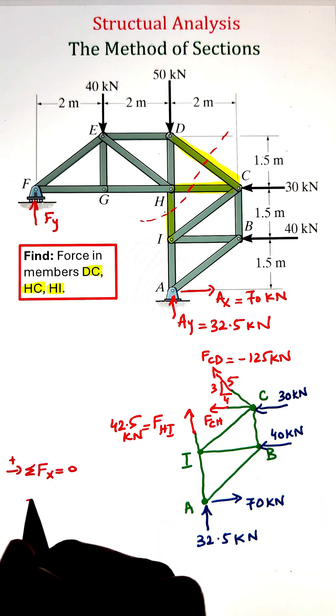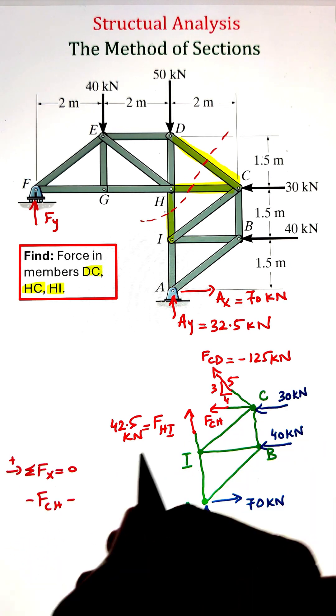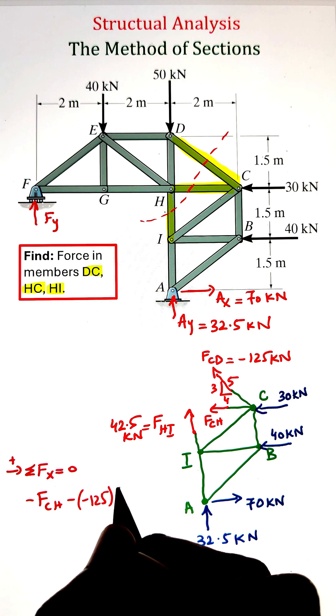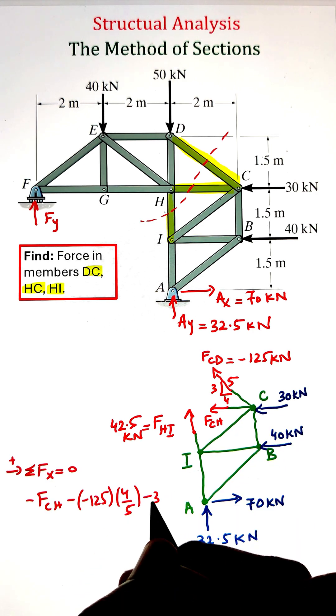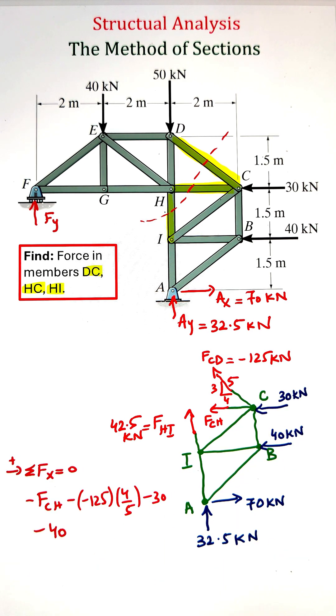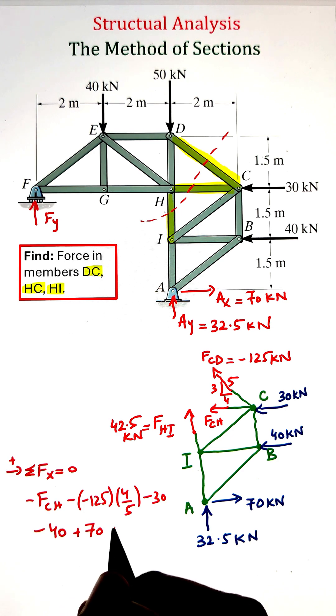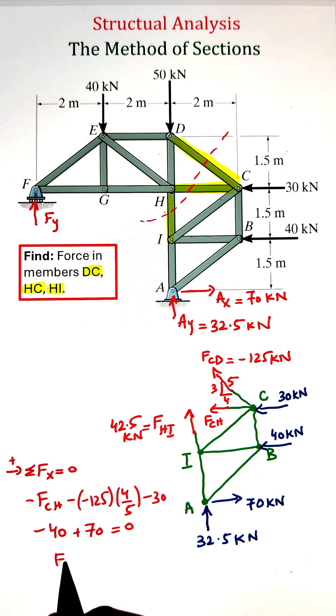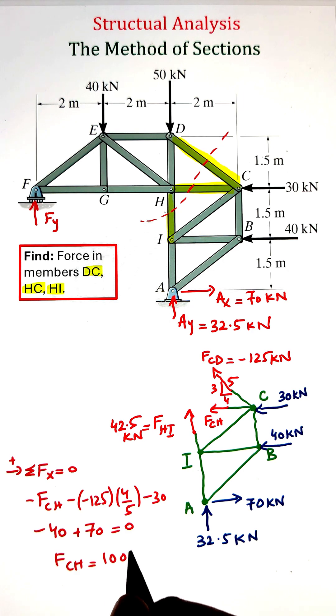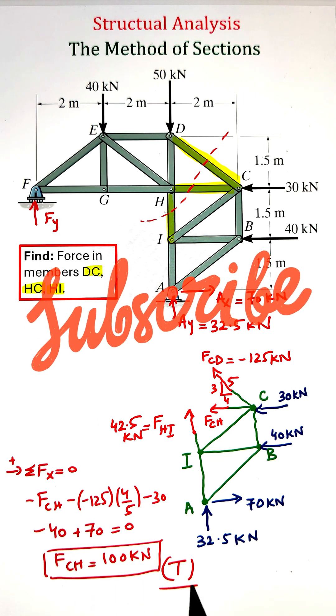Finally, we can write the summation of forces along the x direction and equate it equals to zero to figure out our force in the member CH. That is coming to 100 kilonewtons. Since it's a positive number, the force is in tension.